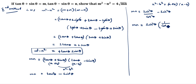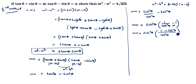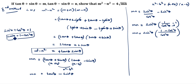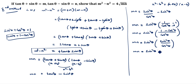mn = sin²θ · (1/cos²θ - 1) = sin²θ · (1 - cos²θ)/cos²θ. Since sin²θ + cos²θ = 1, we have 1 - cos²θ = sin²θ. So mn = sin²θ · sin²θ/cos²θ = sin²θ · tan²θ.